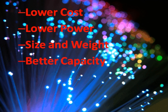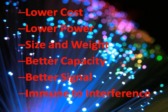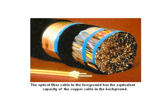Another benefit is better signal — optical fibers have lower signal degradation than copper wiring. Here's a picture comparing copper wiring to fiber optics. The optical fiber cable in the foreground has the equivalent capacity of the copper cable in the background.